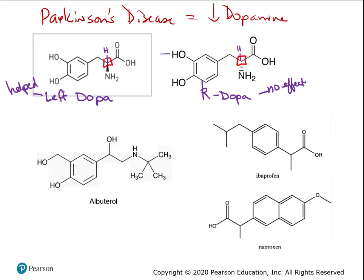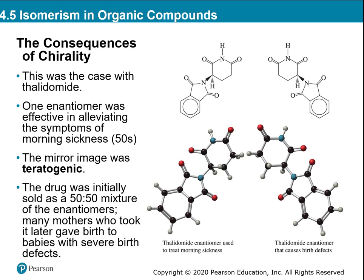Tylenol is another example — it has one single chiral carbon, so there's a right and left-handed form. One side reduces fever, decreases inflammation, and alleviates pain. The other side does nothing. It's like trying to shake hands with your left hand instead of your right — the body doesn't recognize that form. Albuterol, ibuprofen, and naproxen all have chiral carbons in them — one form has biological activity and one form doesn't.